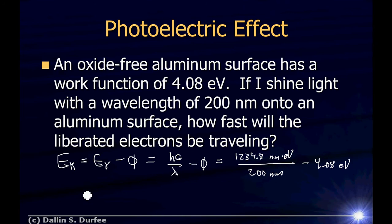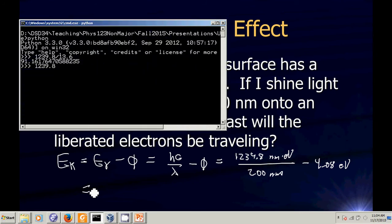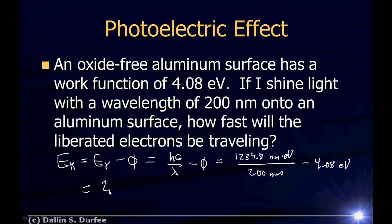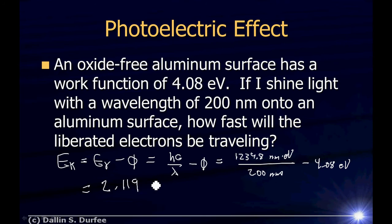So I can easily get the kinetic energy. The kinetic energy is 1,239.8 nanometer electron volts, divided by 200, and then I subtract off the work function, which is 4.08 electron volts, and it looks like my electrons will have 2.119 electron volts.